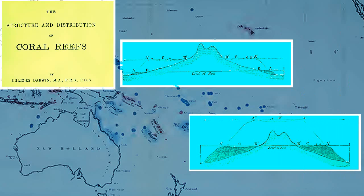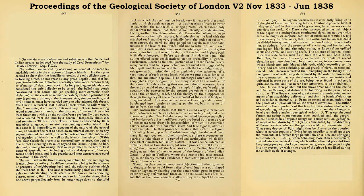On returning from his trip on the Beagle, Darwin communicated his hypothesis to Lyell, who immediately contacted William Whewell, head of the Geological Society. And on May 31st, 1837, Darwin read a paper entitled On Certain Areas of Elevation and Subsidance in the Pacific and Indian Oceans, as deduced from the study of coral formations. The whole idea might seem obvious to us now, but only because of the genius and inquiring minds of the many Lyells and Darwins which preceded us.